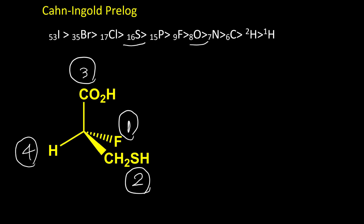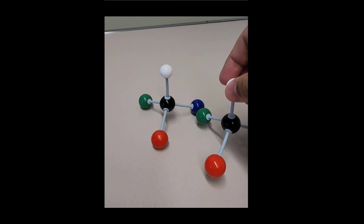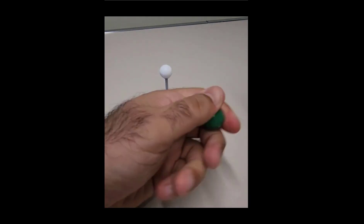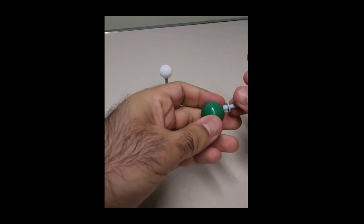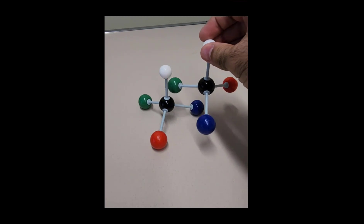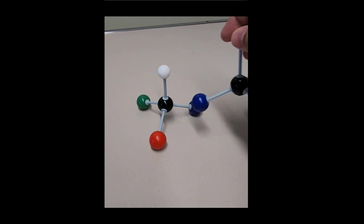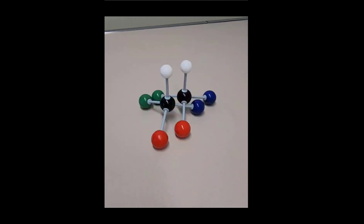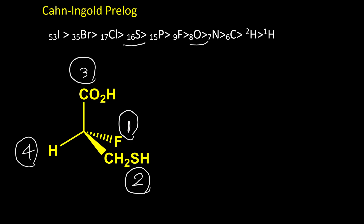There are two different tricks to find the configuration for this type of molecule. Take a look at these two molecules — they are completely the same and matching each other, so they're not enantiomers; they're identical. But if I swap two groups — swapping green and red — let's see what happens. After swapping these two groups, the molecules are not matching anymore; they're not identical. Actually they are mirror images. So by switching two groups, we convert the molecule to its enantiomer. Because we know that configurations for enantiomers are opposites. So in this molecule, I can choose fluorine and hydrogen and swap these two groups.